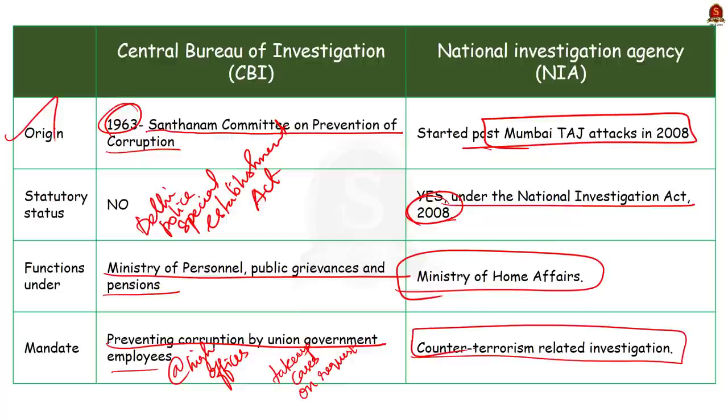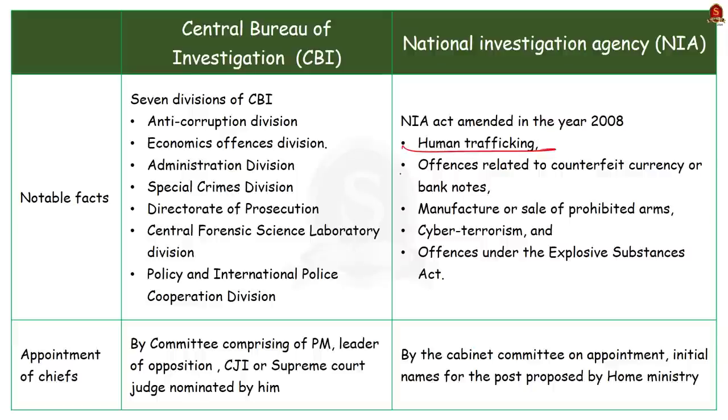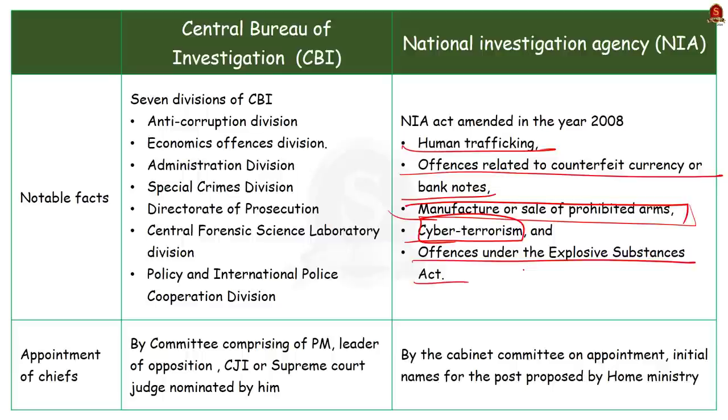Here note that NIA act was amended in the year 2019. This allowed the NIA to investigate few other offenses which includes human trafficking, offenses related to counterfeit currency or bank notes, then manufacture or sale of prohibited arms, fourth is cyber terrorism, and finally offenses under the Explosive Substances Act 1908. So these are the new areas in which NIA can start investigation according to the amended version of NIA act.